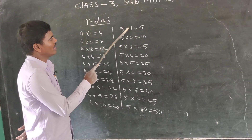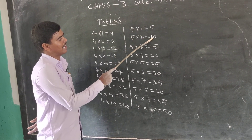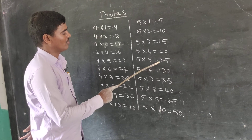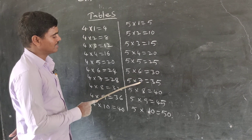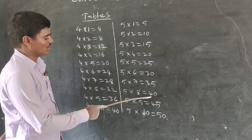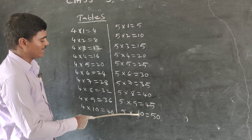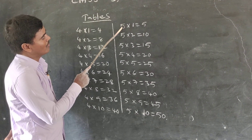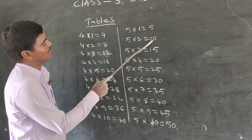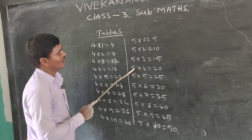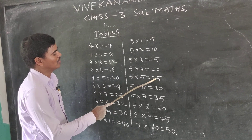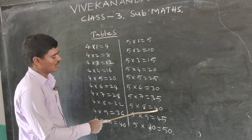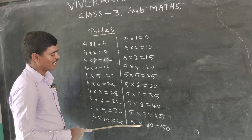Next, the 5 times table: 5 ones are 5, 5 twos are 10, 5 threes are 15, 5 fours are 20, 5 fives are 25, 5 sixes are 30, 5 sevens are 35, 5 eights are 40, 5 nines are 45, 5 tens are 50.